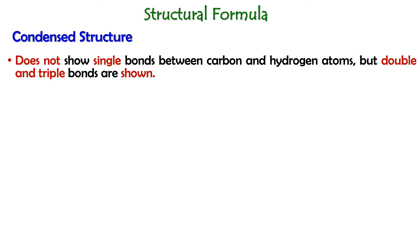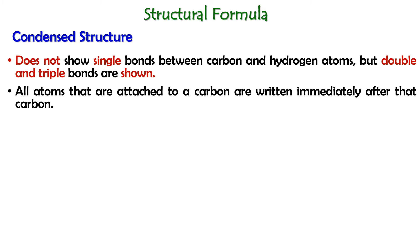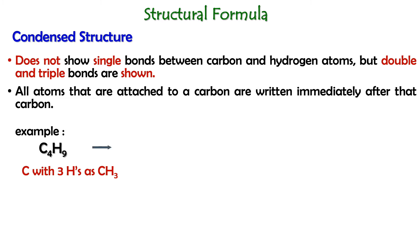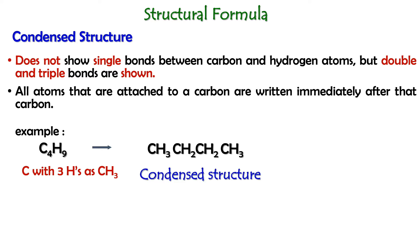Next, let's look at condensed structure. Condensed structure does not show single bonds between carbon and hydrogen atoms, but double and triple bonds are shown. All atoms attached to a carbon are written immediately after that carbon. For example, for a C4H9 molecule, a carbon atom with three hydrogens is written as CH3, so the condensed structure would be CH3CH2CH2CH2CH3.